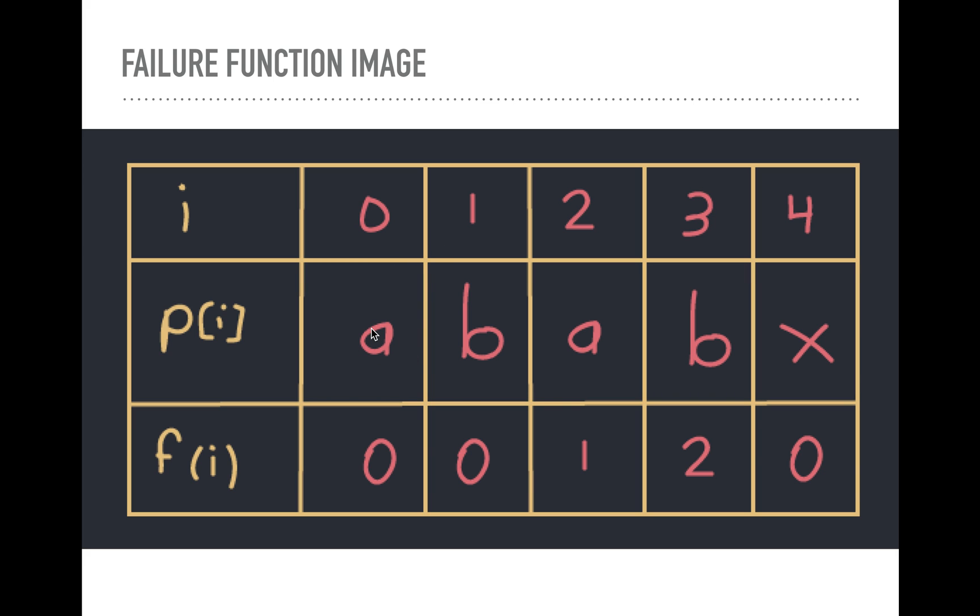So here's an example of the failure function visually. So our pattern is a, b, a, b, x. So for whatever reason, we're looking for a, b, a, b, x inside of our text T, which is just somewhere else. We don't know what it is yet. So this is the failure function. We're preprocessing this pattern.